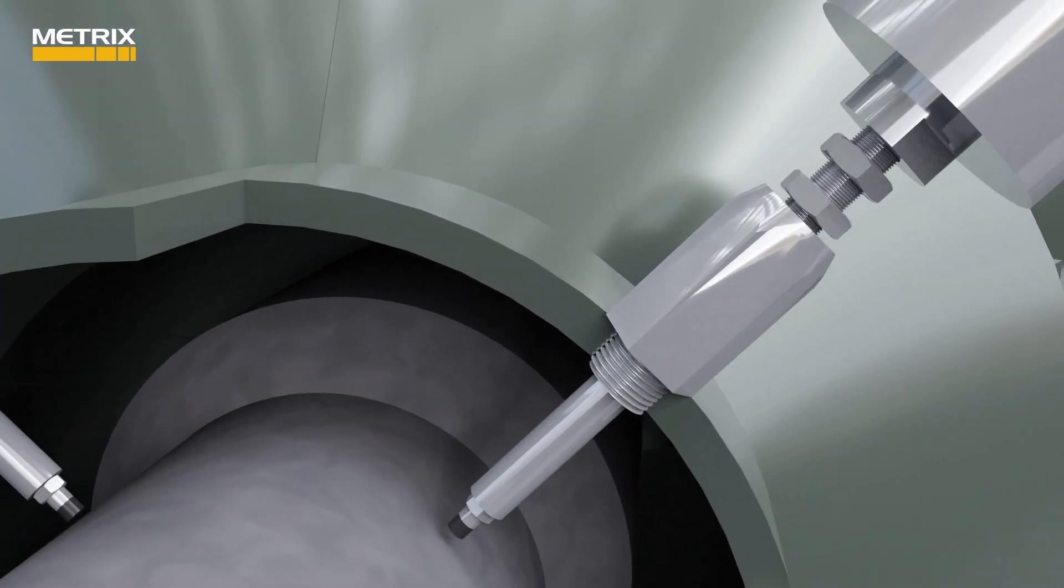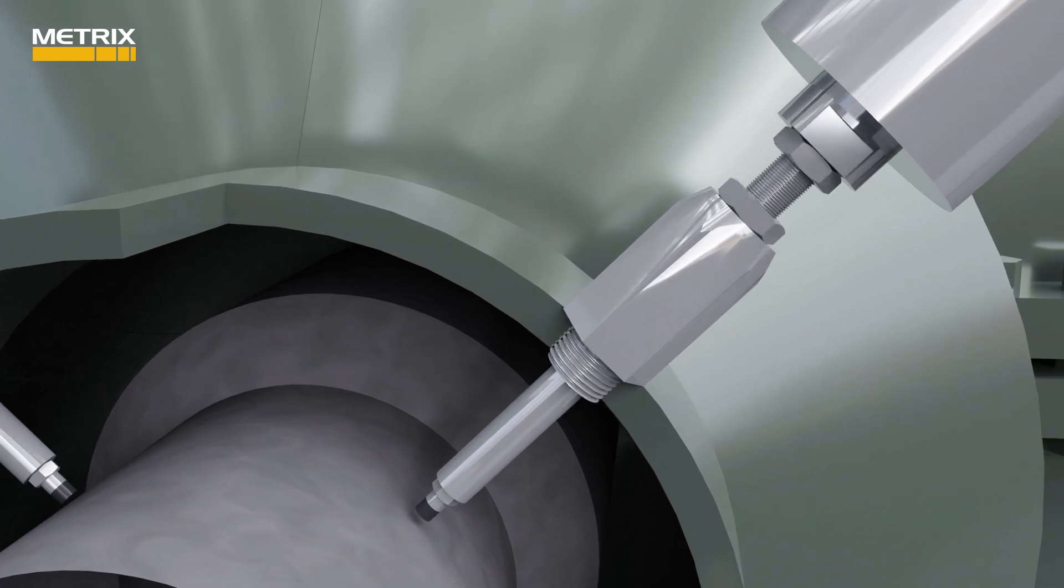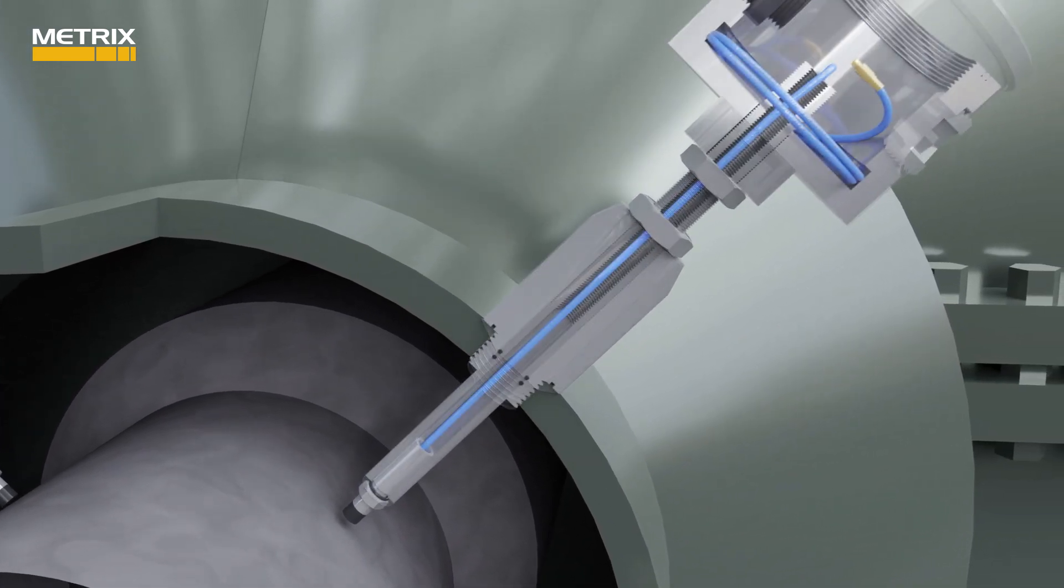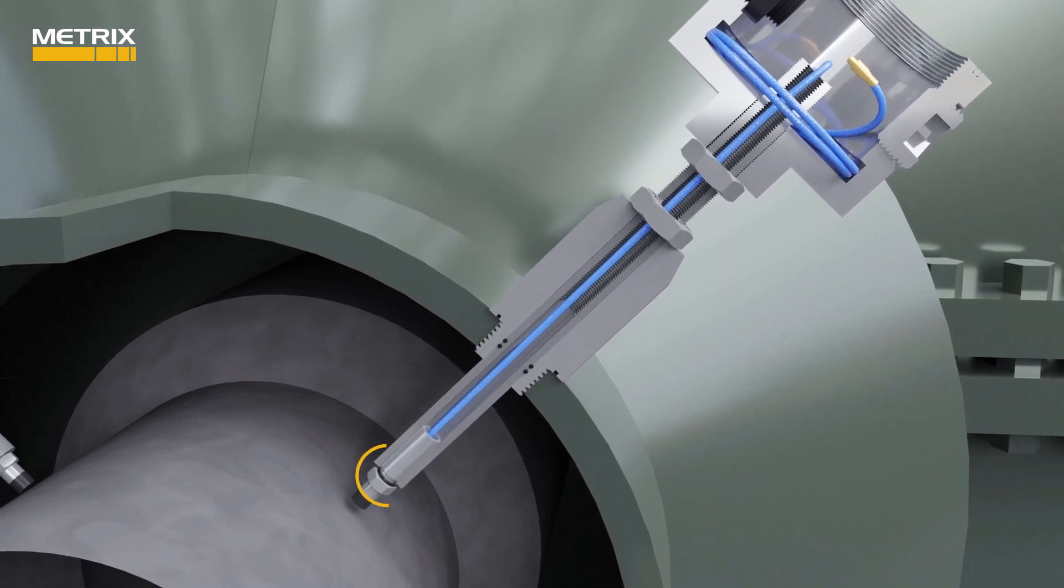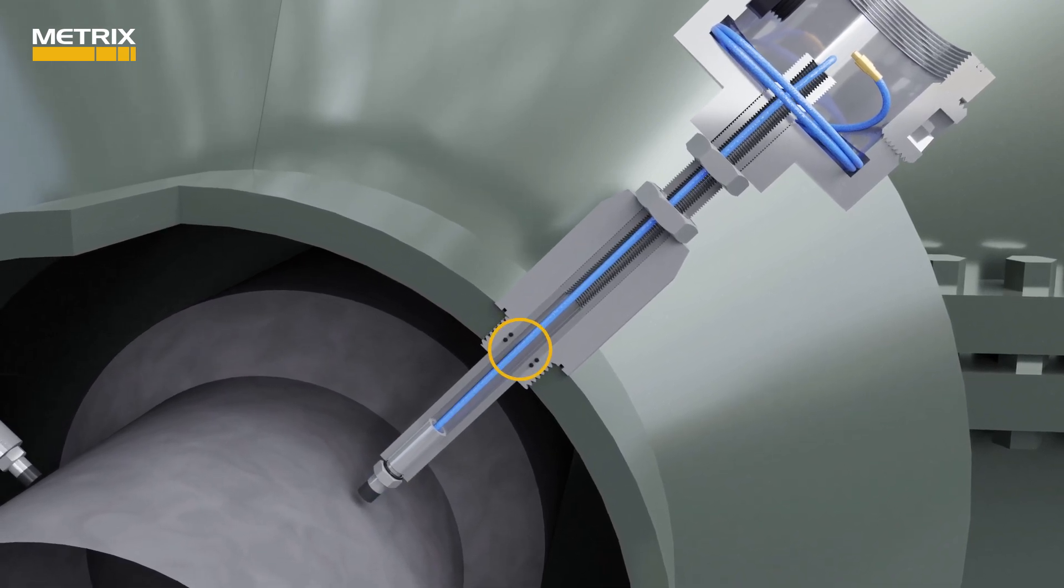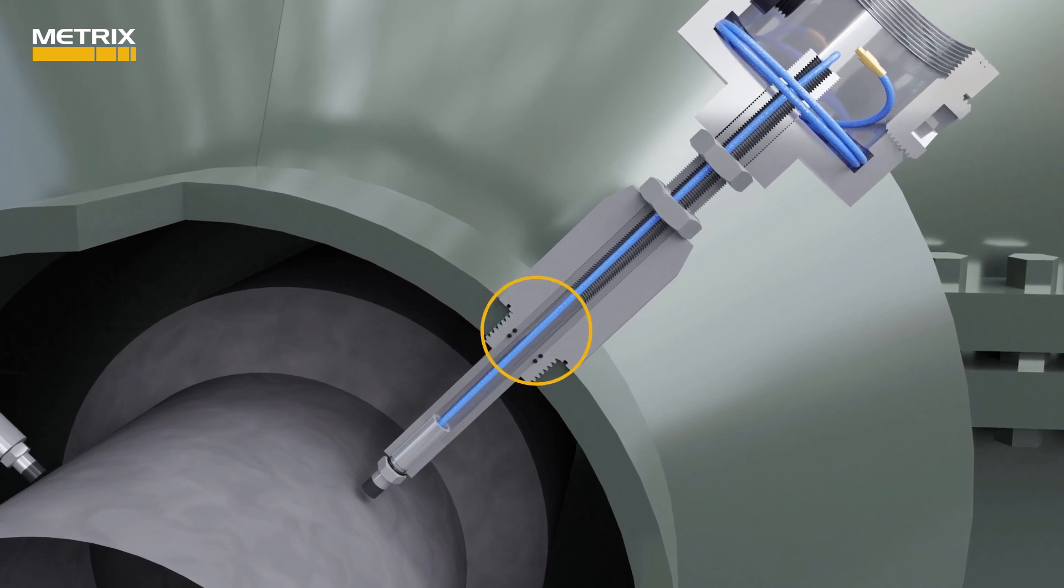The MX8030 reverse mount probe and 5497PM probe mount has four O-rings to prevent oil seepage. One at the probe tip, two on the probe mount adjustable sleeve, and one at the probe mount to machine interface.